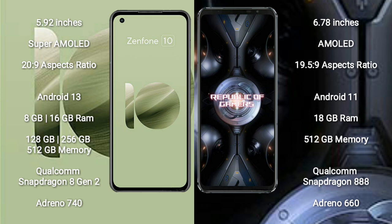The ROG Phone 5 Ultimate has an aspect ratio of 19.5:9. The ASUS Zenfone 10 runs on the Android 13 operating system, while the ASUS ROG Phone 5 Ultimate runs on Android 11. The Zenfone 10 comes with 8GB or 16GB RAM and 128GB, 256GB, or 512GB internal storage.